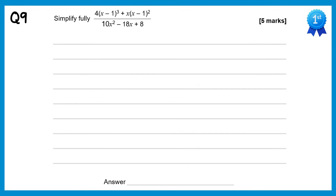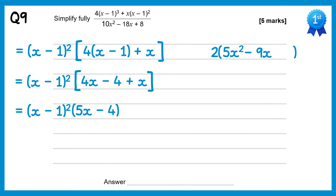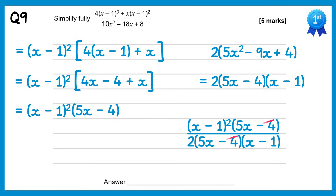To factorise the top of this, we need to take out the factor of x minus 1 all squared. Inside a large bracket you'd then get 4 lots of x minus 1 plus x. Expanding inside this bracket gives 4x minus 4 plus x, and simplifying gives x minus 1 all squared times 5x minus 4. Looking at the bottom of the fraction, there's a common factor of 2 to take out first, giving 5x squared minus 9x plus 4, which factorises to give 2 lots of 5x minus 4 times x minus 1. Combining them in one fraction and cancelling: the 5x minus 4 cancels, and the x minus 1 on the bottom cancels with one of the x minus 1s on the top, so we end up with x minus 1 over 2.